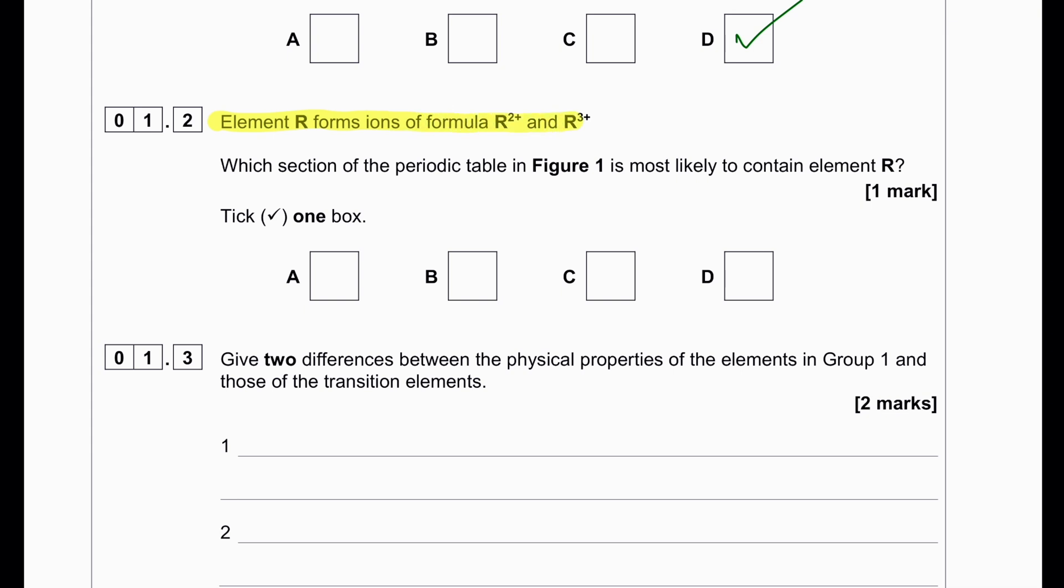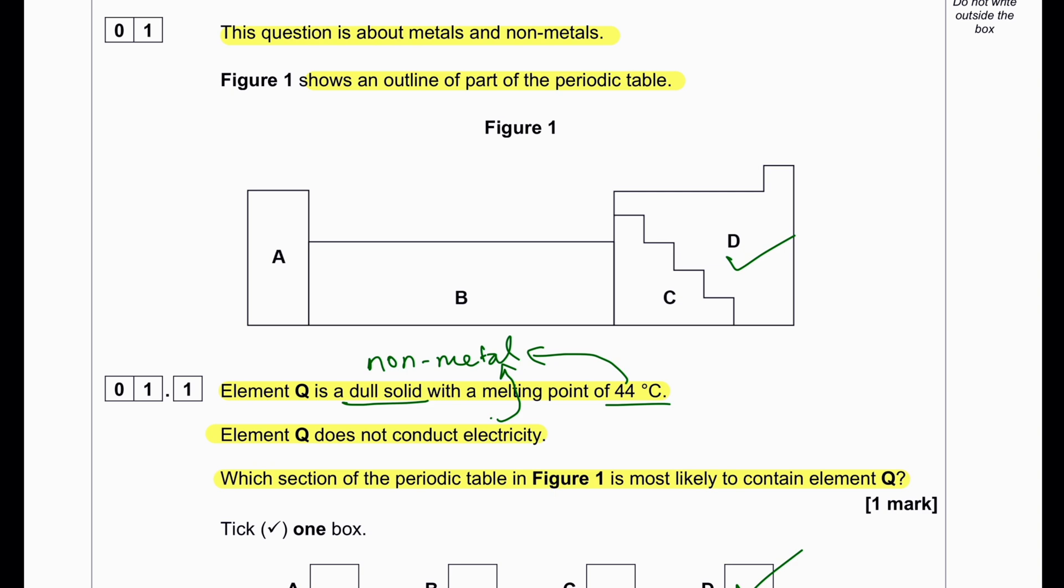Element R forms ions with R2+ and R3+. This indicates variable oxidation state, which is a property of transition elements. So this should be B.